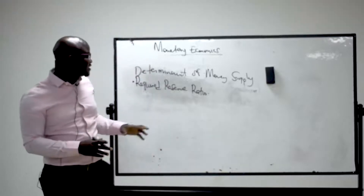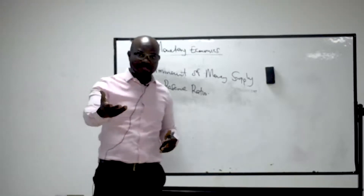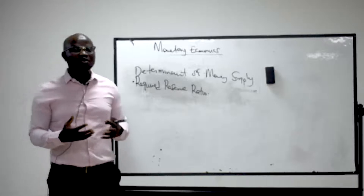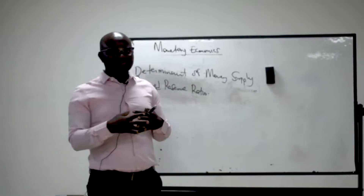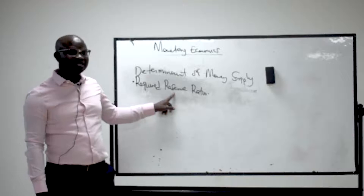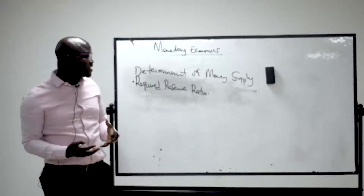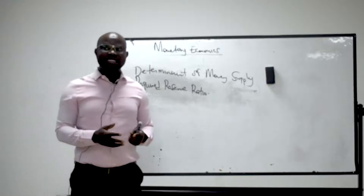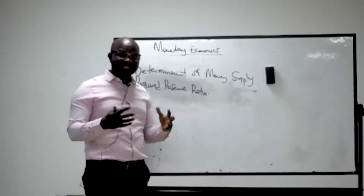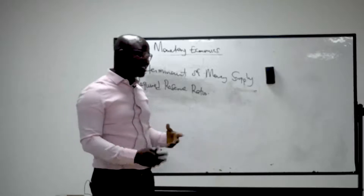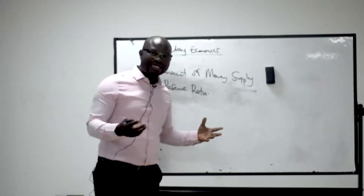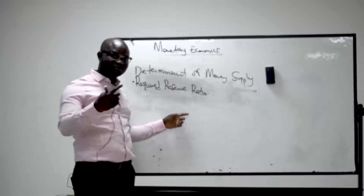The CBN can use the required reserve ratio to regulate money supply. If there is too much money in the economy and they want to implement contractionary monetary policy, they can increase the required reserve from 25 to 30 billion, for example. This limits the capacity of financial institutions to issue more money.